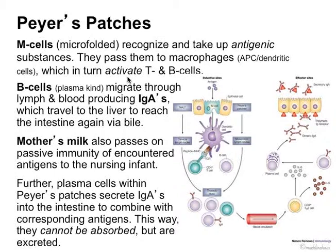B cells then migrate — activated B cells migrate through the lymph and the blood — producing different antibodies, the ones called IgAs.